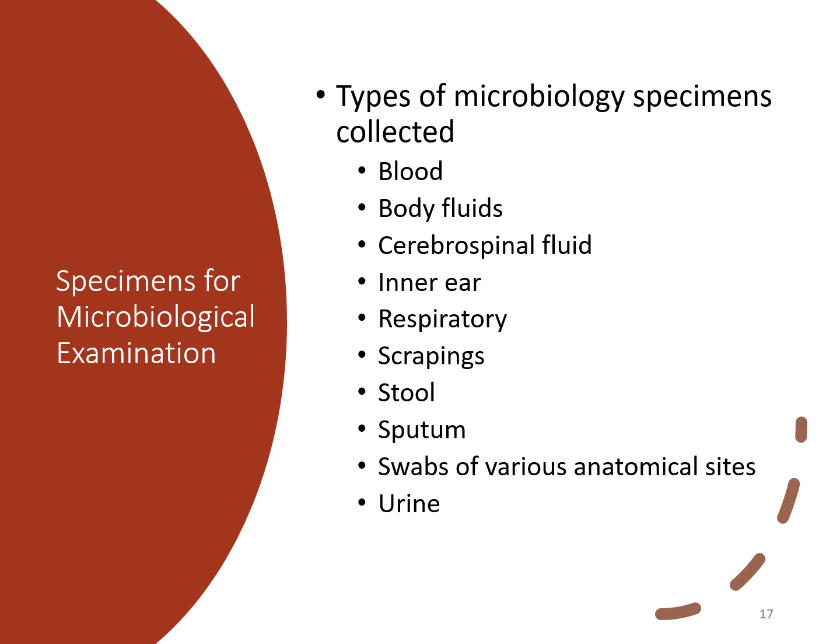A variety of things can be submitted to the lab for culture, including blood, body fluids, spinal fluid, fluid from inside the ear, respiratory specimens, skin scrapings, stool, sputum, swabs from various sites throughout the body, urine, and various tissues. You can even have whole limbs, toes, or fingers submitted to the lab for culture, which would require processing the specimen before culturing.